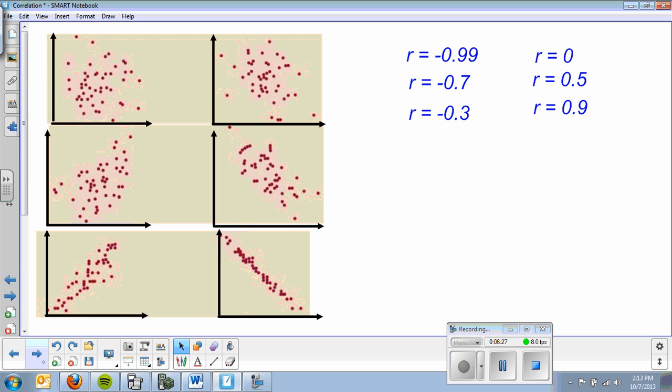On this last slide, I have a little matching. I've got six graphs and six correlations. What I want you to do is copy them down, sketch, and then try to match which one has each correlation. Go ahead, pause it, try it, and then you can check it with the answers I'm about to show.